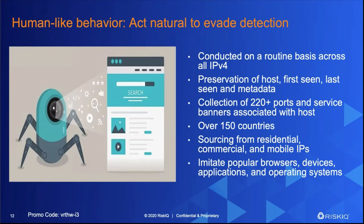Let me give you a little background on what RiskIQ does and how we gather this data and make it available. We go out and scan the entire IPv4 space — all IP addresses — and over a short period of time, a couple days to a week, we hit everything. When a new domain gets purchased, we start monitoring those domains. We gather data like a real user: we visit the website, interact with it, pull down the full document object model, look at over 220 different ports, come from over 150 countries, and source from commercial, residential, and mobile IP space, imitating every type of browser, device, application, and operating system.